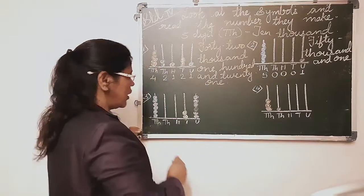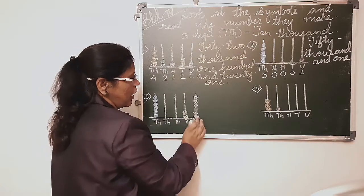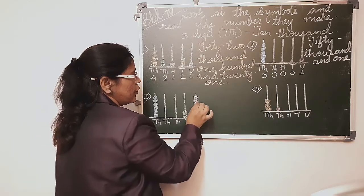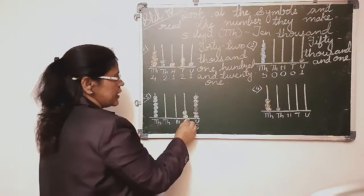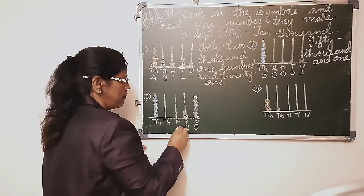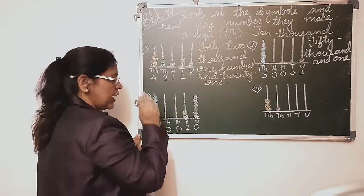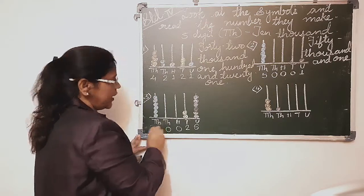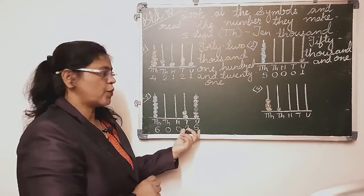Now the third one. On the units place, count: one, two, three, four, five, six — six beads. Tens place: one and two. Hundreds place: no beads, put zero. Thousands place: no beads, zero. Ten thousands place: one, two, three, four, five, six — six beads. So we read the number: it is sixty thousand and twenty-six, 60,026.